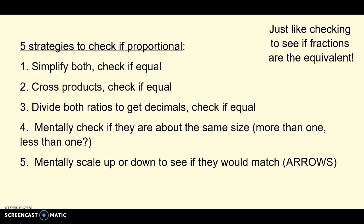Here are the five strategies — make a list on your paper. The first one is to simplify them both and check if they're equal. The second is to check cross products and see if those cross products are equal. Third is to divide both ratios and get decimals — if you have a calculator, this can be an easy way. Fourth, we can mentally check just by looking at the numbers, seeing if one is more or less than a half. And fifth, mentally scale it up or down — we'll talk about how to use arrows for that.